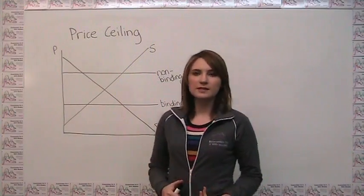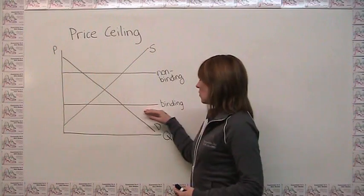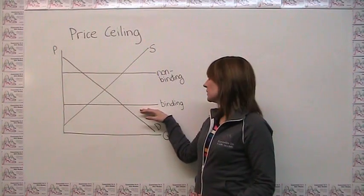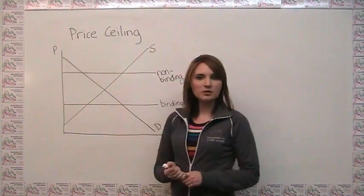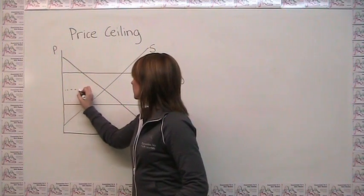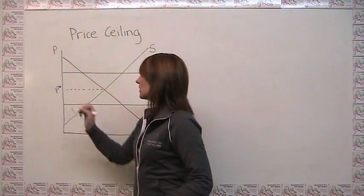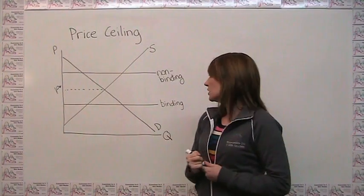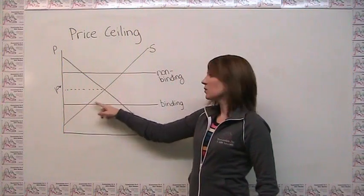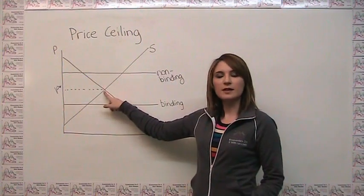We distinguish between two cases here. One where the price ceiling is what we call binding, or where it actually affects the market outcome. In our natural state, we would want our market price to be here - this is our free market outcome. So with this price ceiling here, if we're restricting prices to be below it, we've excluded this free market outcome, so we're actually having an effect on the market.